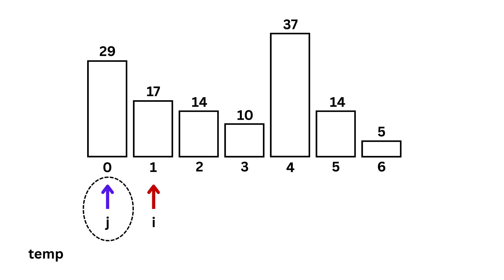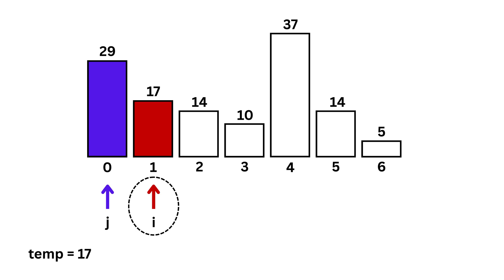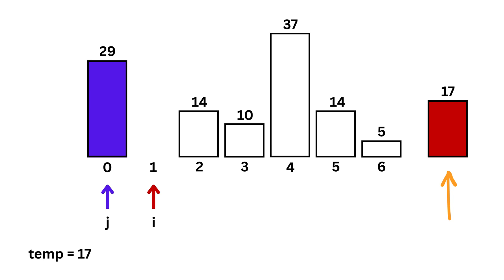j is equal to zero, which means we are pointing to 29. Then, the variable i is at position 1, so temp becomes 17. We then compare the value at temp with the value at position j. So we compare 17 with 29.